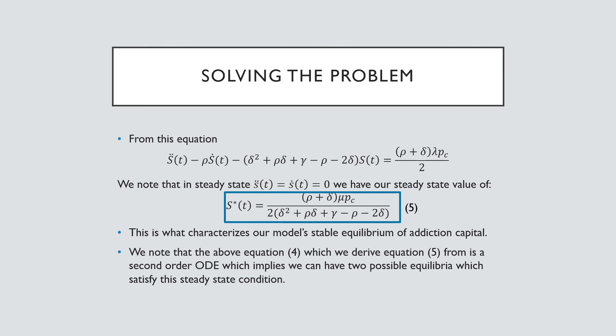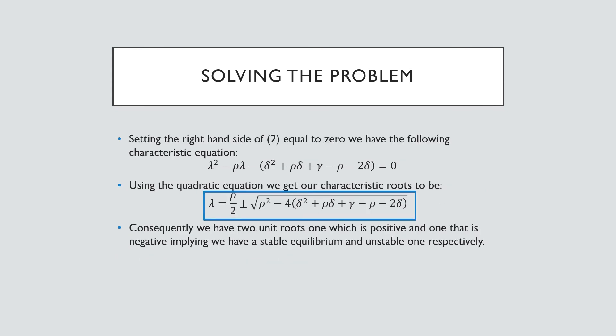So we need to check for that. The way that we're going to check for that is we're going to set up the right hand side of our equation four equal to zero, and we're going to use the quadratic equation to get our characteristic roots here.